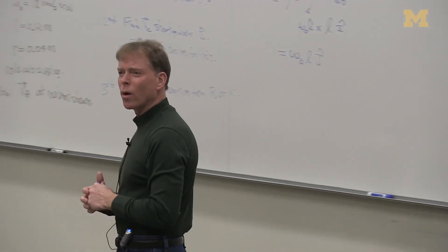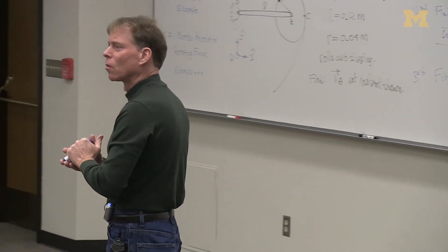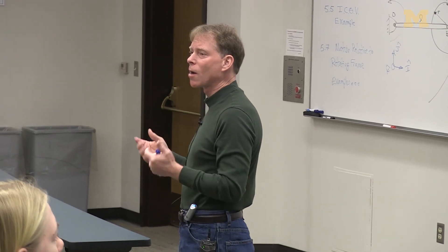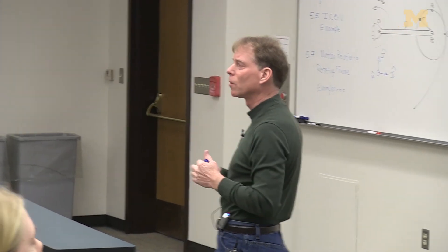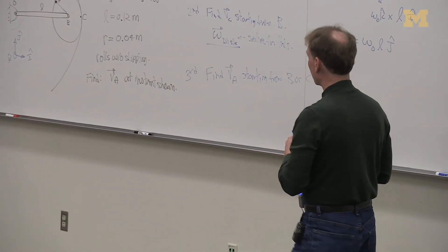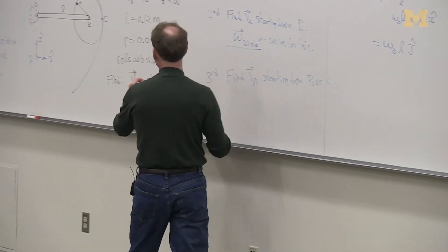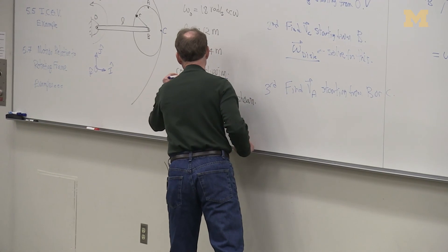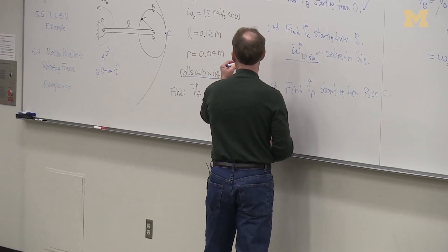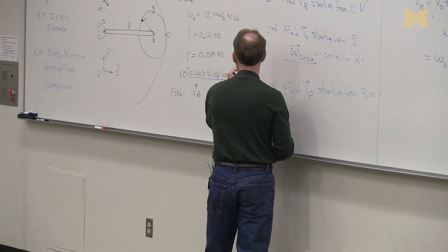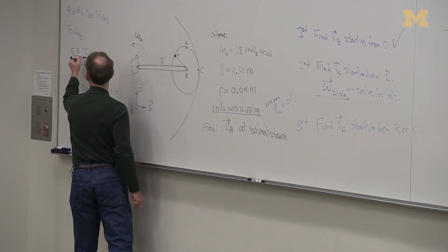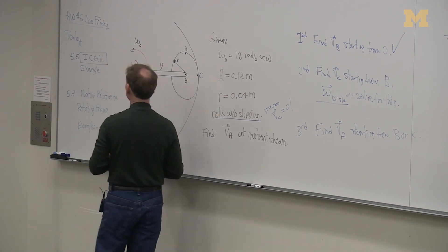Why did we pick point C? Why did we decide we want to calculate the velocity of C? Do we know anything about the velocity of C to begin with? Because it rolls without slipping, the velocity of C is zero. So this is key: rolling without slipping means that the velocity of C is exactly zero. It is what we call the instantaneous center of zero velocity.